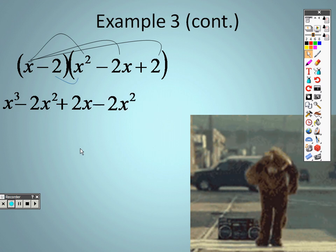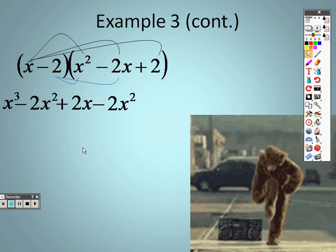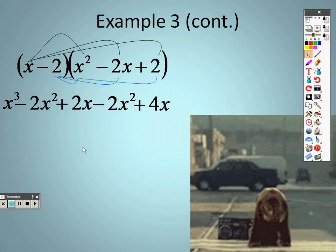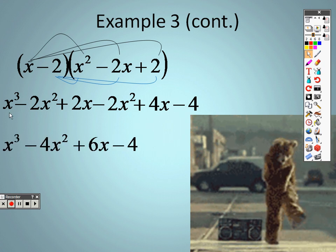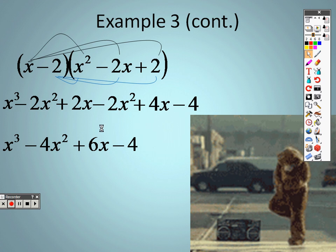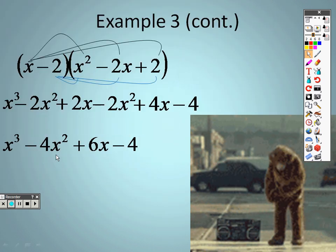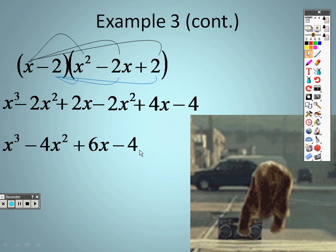-2 times x² is -2x². -2 times -2x is positive 4x. And -2 times 2 is -4. So I combine my like terms. I have an x³ out in front. A -2x² and a -2x². There's a -4x².